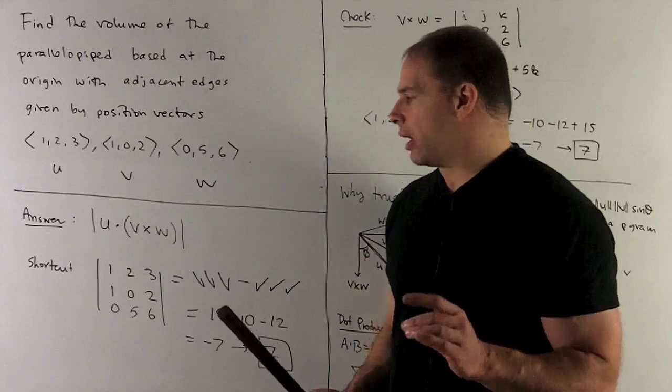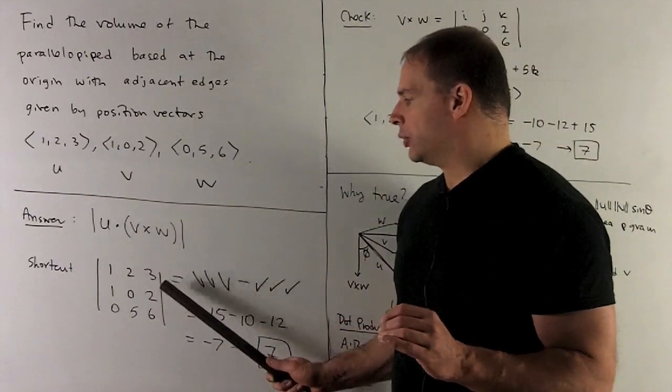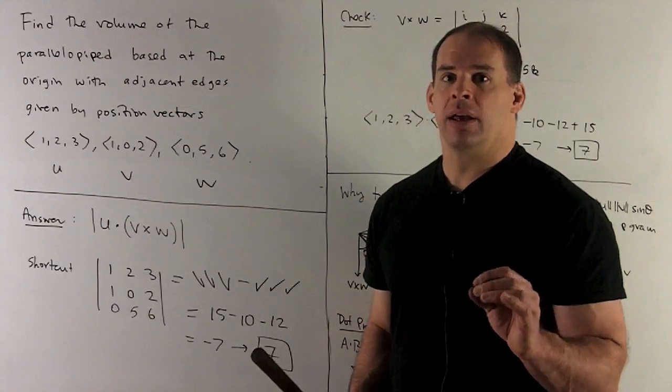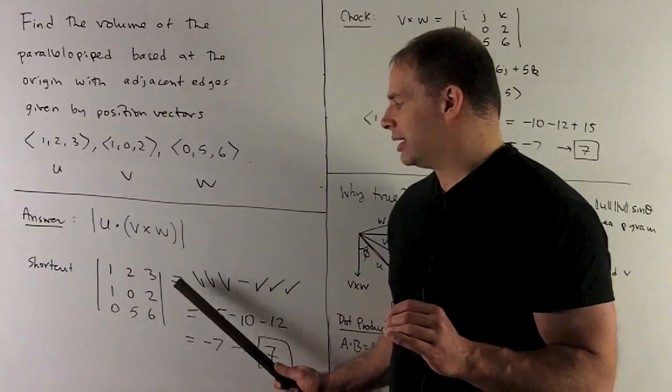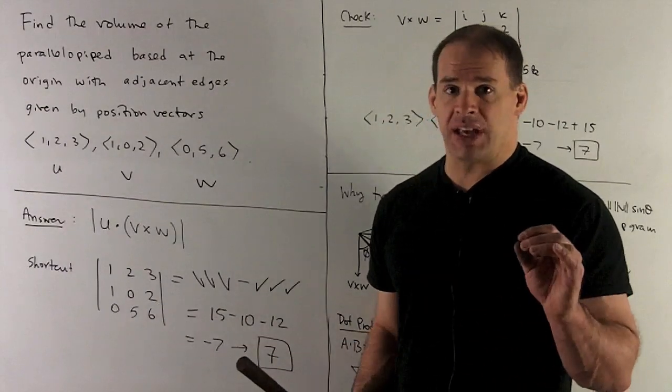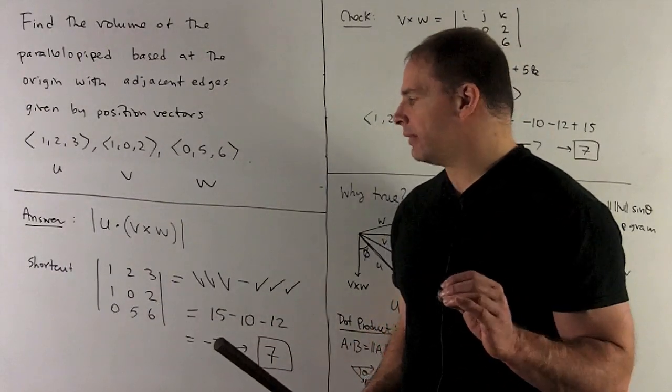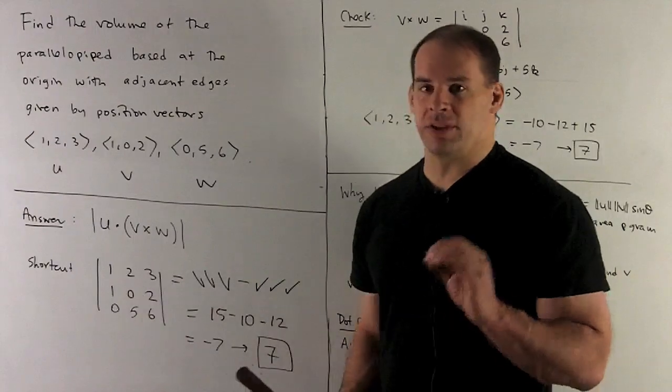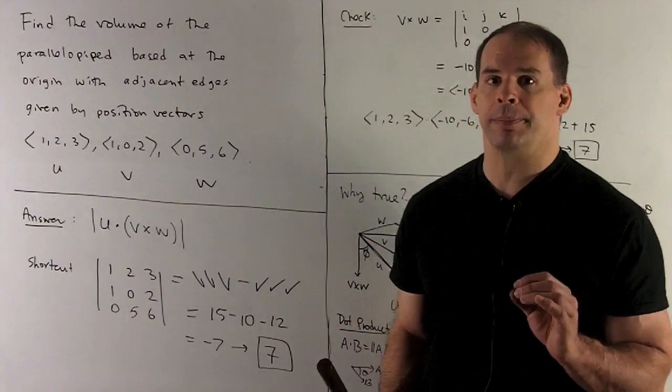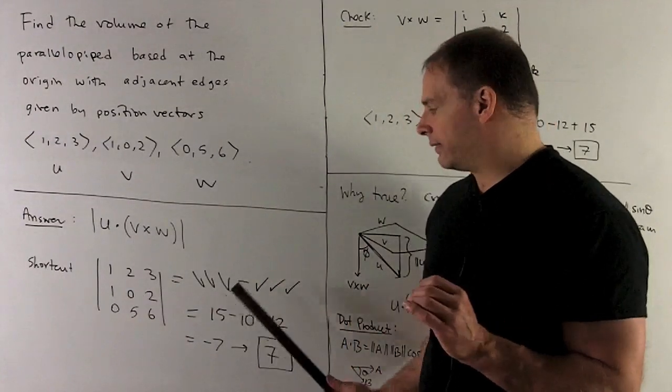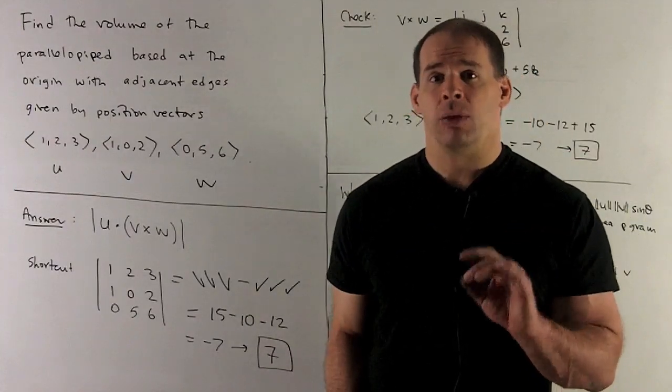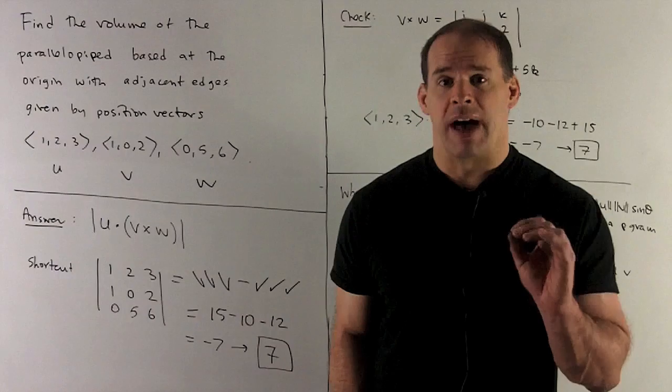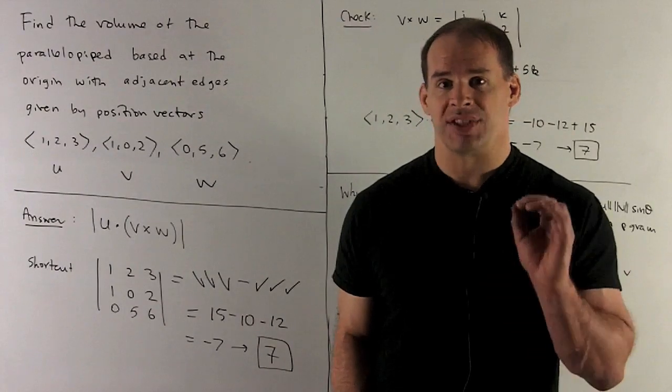Okay, we're going to go backwards now. So I'm going to do 1, 2, 5 gives me a 10, but I put a minus sign on it. Then I have 2, 1, 6 put a minus sign on it. So it's a minus 12. And then 3, 0, 0 gives me a 0, so we just skip it. So what do I get? I have 15 minus 10 minus 12 gives me a minus 7. We throw away the minus sign. So the volume of my parallelepiped is 7.